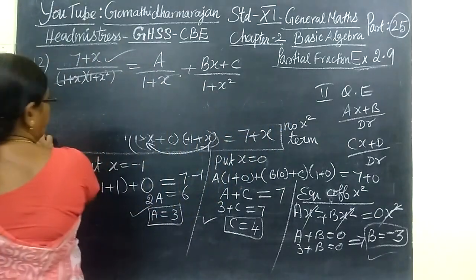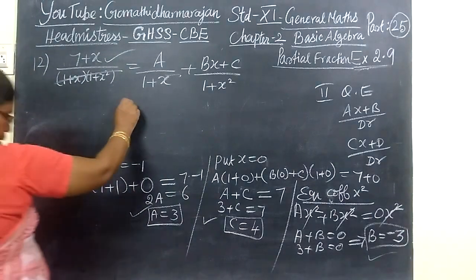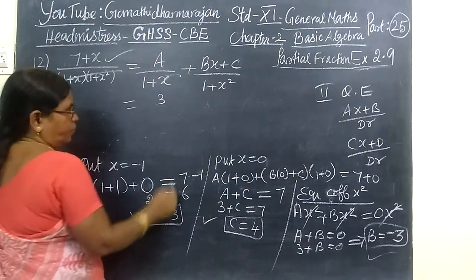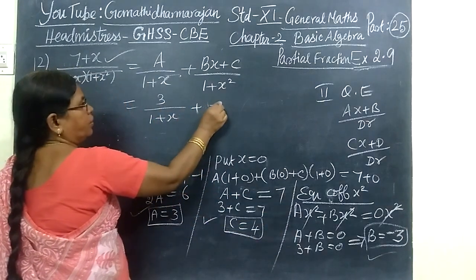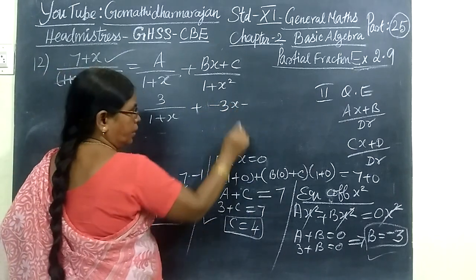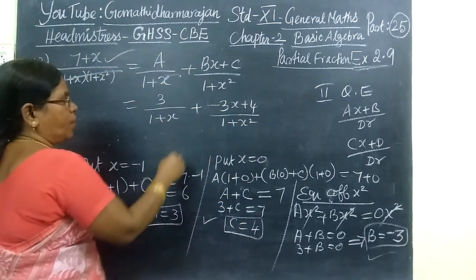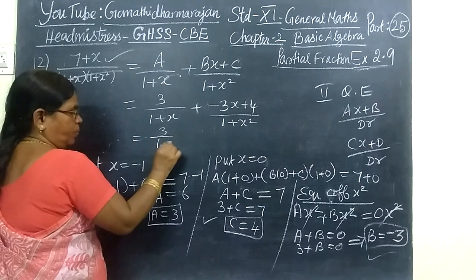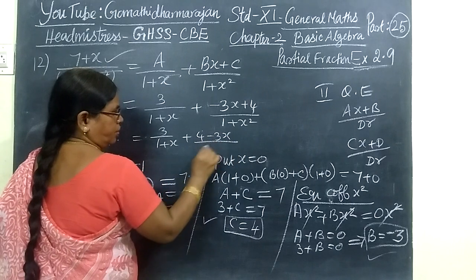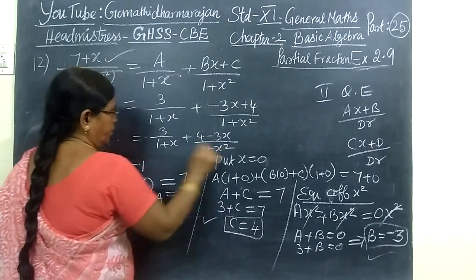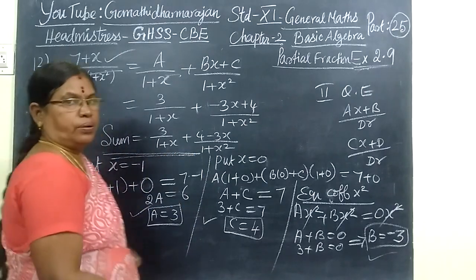The answer I write in the first step. So this can be written as A equal to 3 by 1 plus x, plus B minus 3, so minus 3x plus 4 by 1 plus x squared. This is a very simple partial fraction.